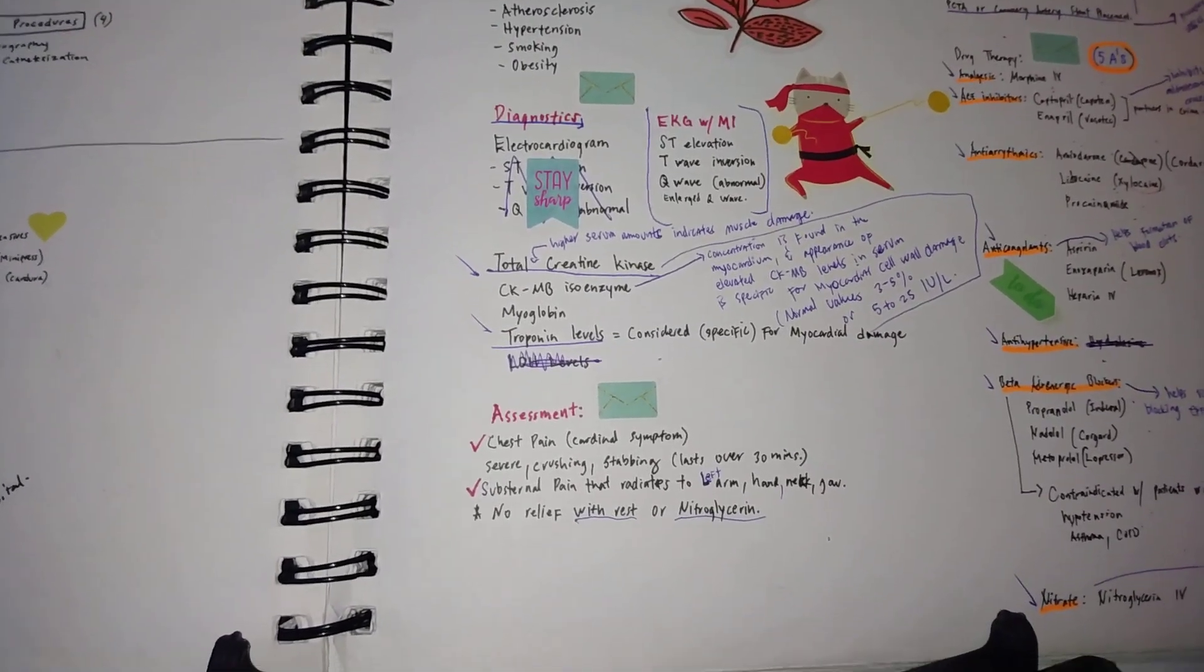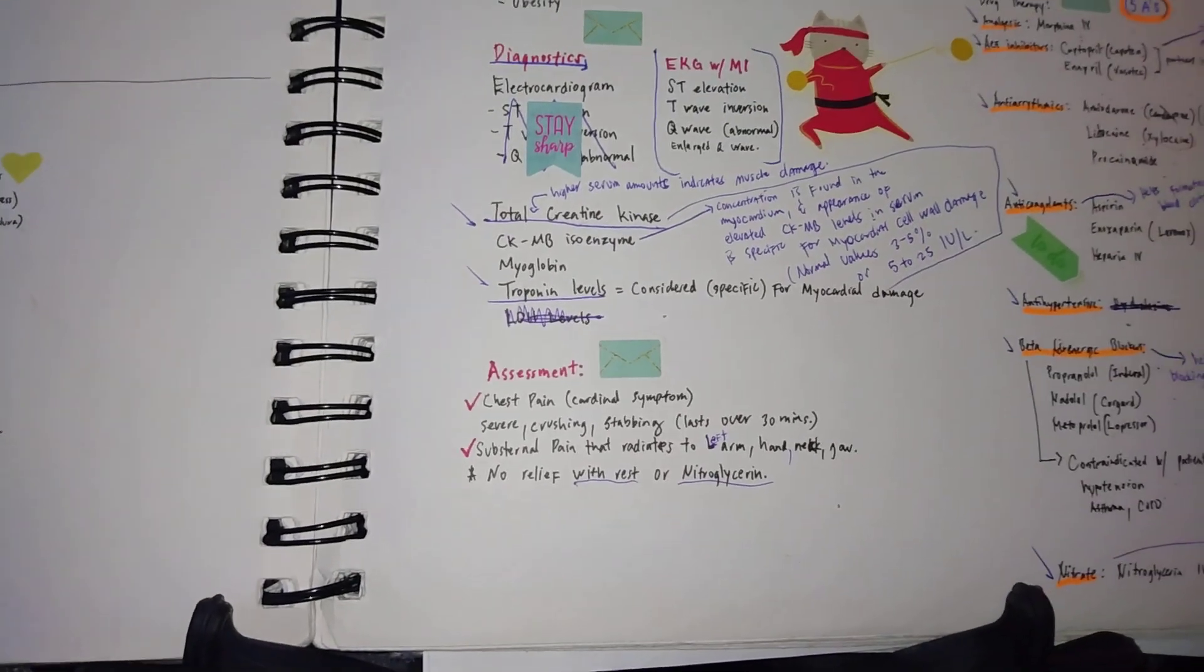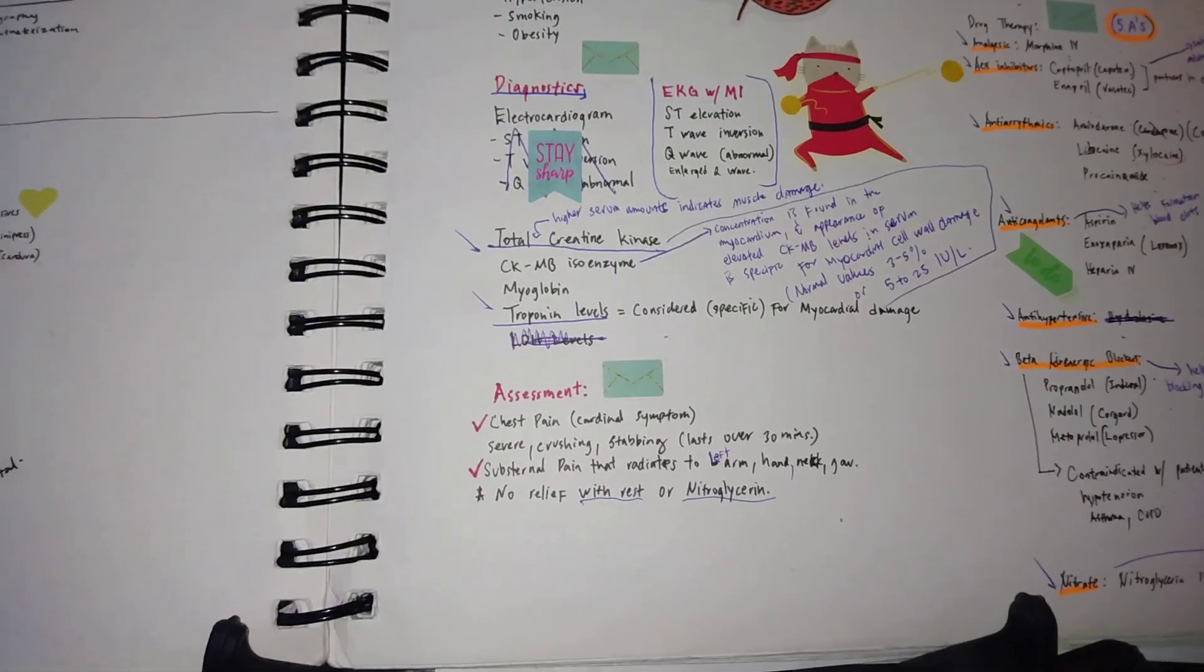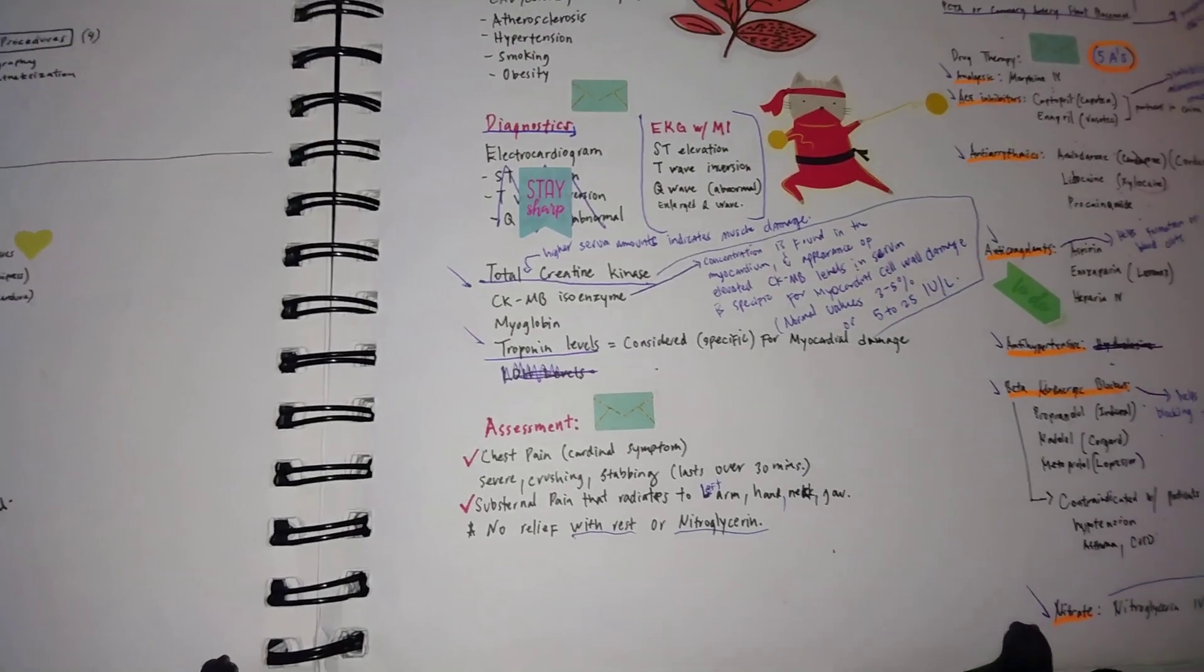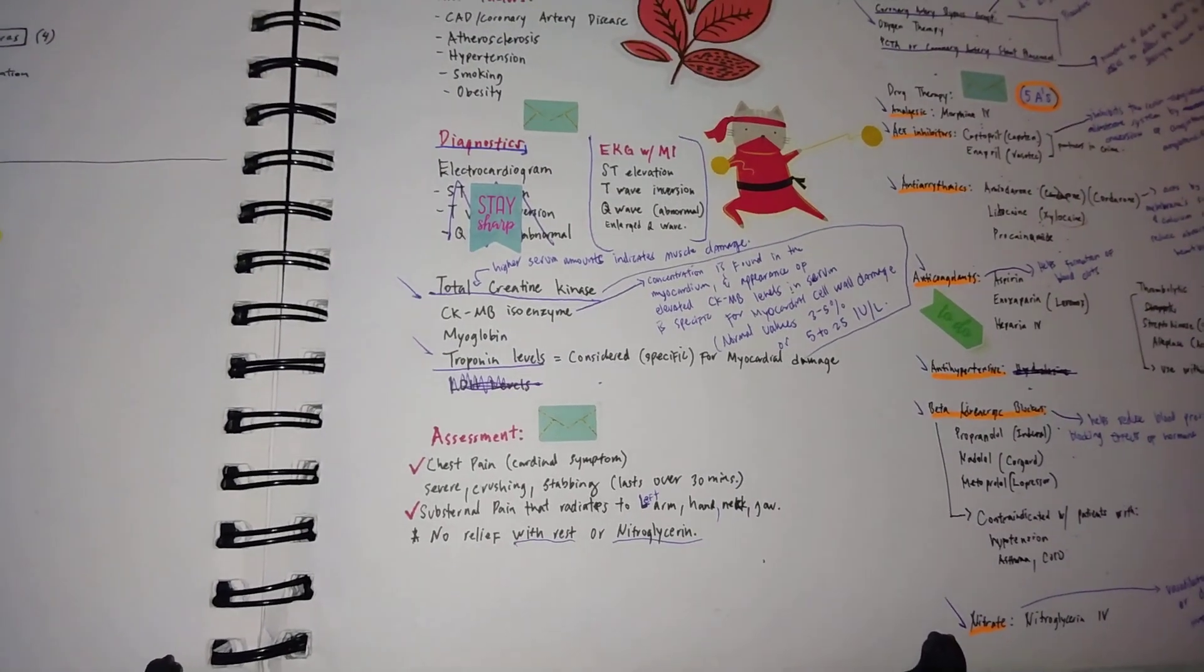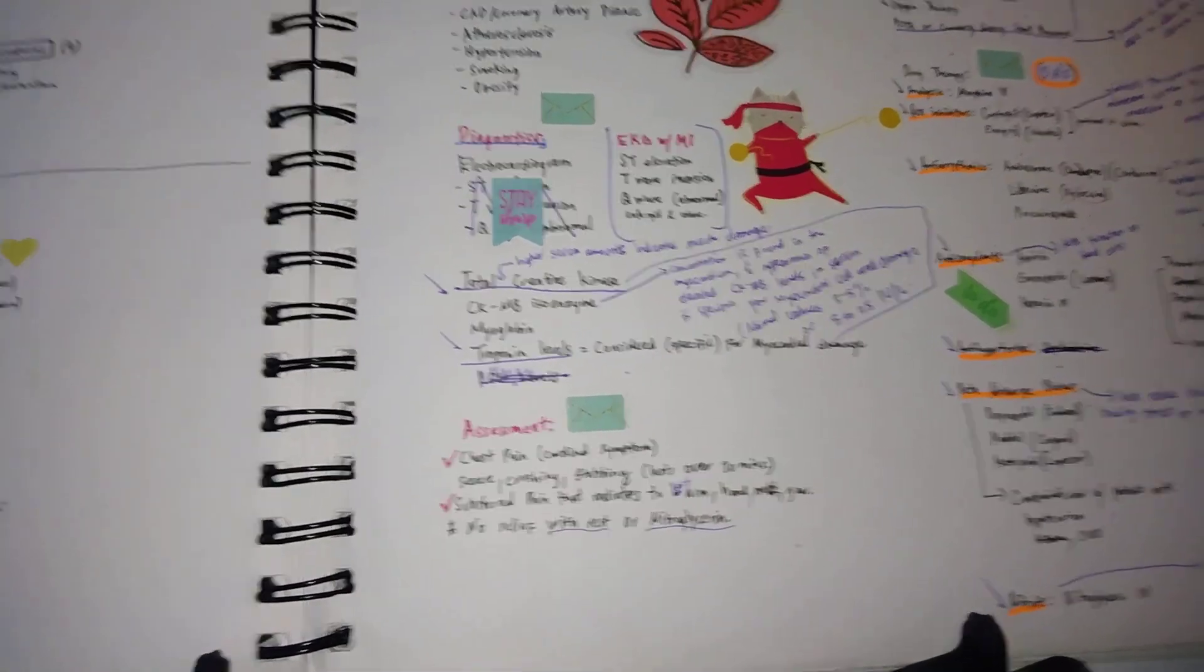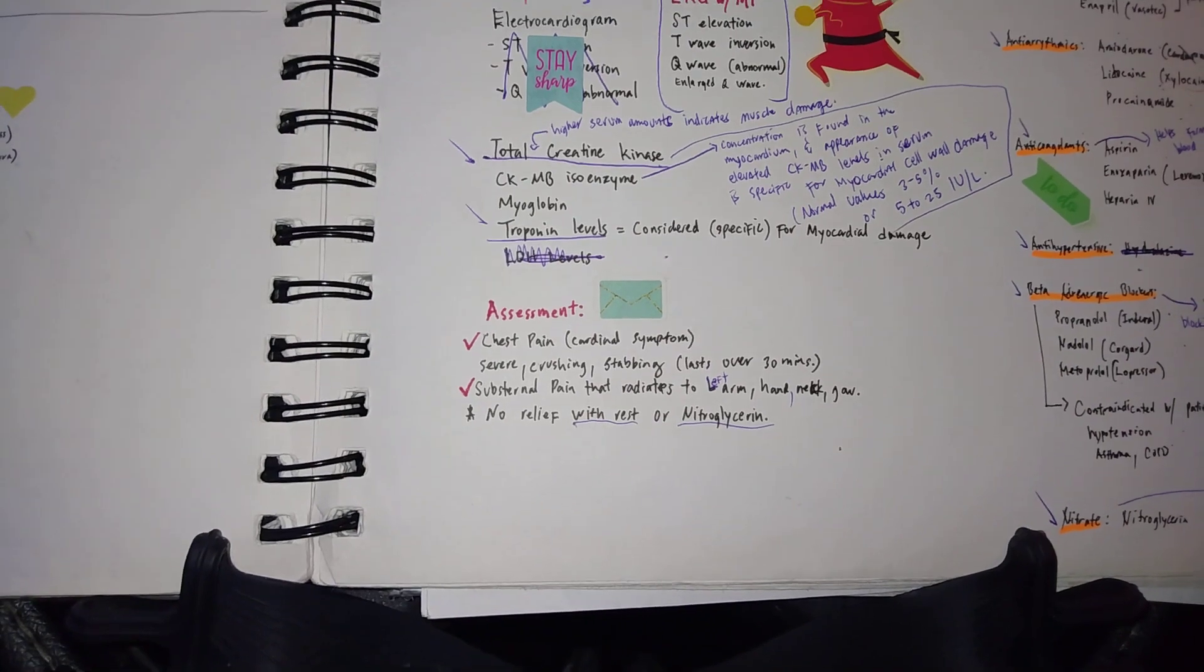Also, the CK-MB isoenzymes are found in the myocardium, and there would be elevated CK-MB levels in the serum. This is very specific for myocardial cell wall damage. Know the normal values for the CK-MB, which is normally 3 to 5% or 5 to 25 units per liter.